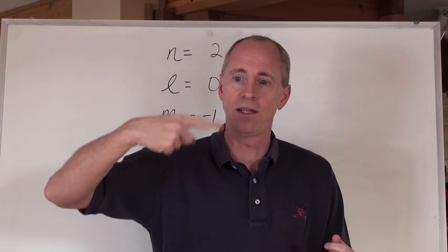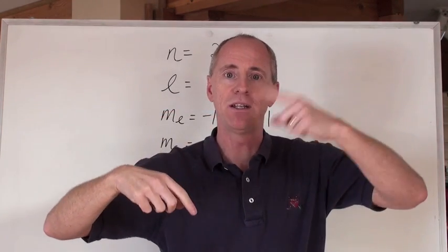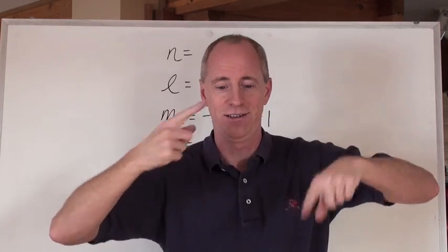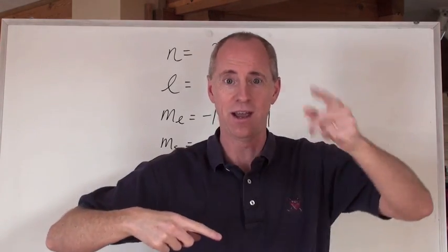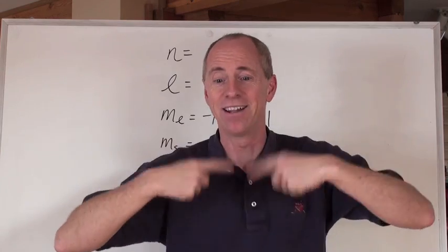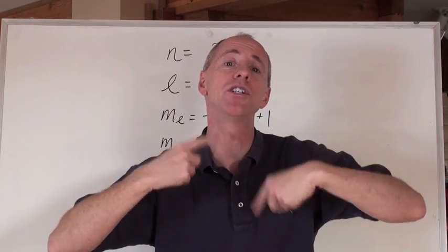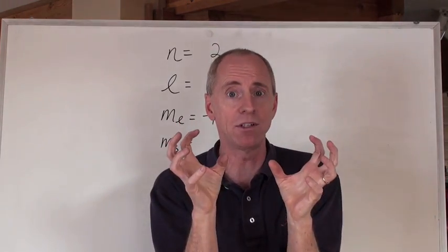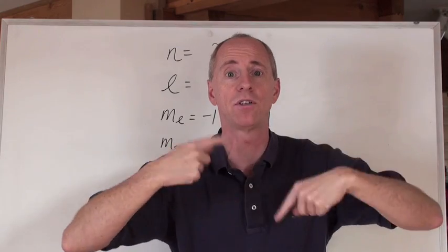one must be spinning this way, and the other one must be spinning the opposite way. You try this, one hand going this way and one going this way. You have to learn how to do that, but you can, and so the electrons can actually be with each other in the same orbital, even though they're both negatively charged, as long as they're spinning in opposite directions,